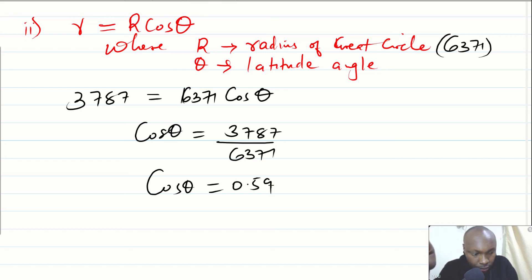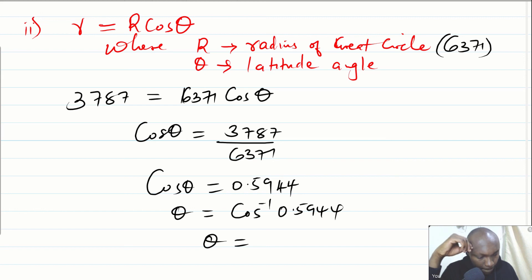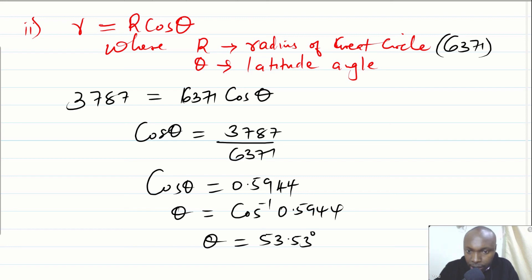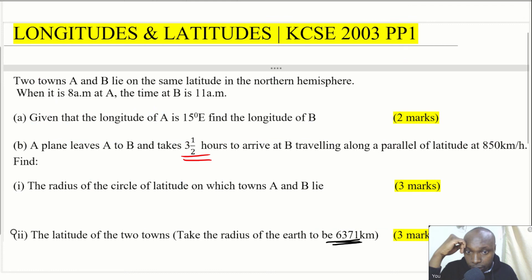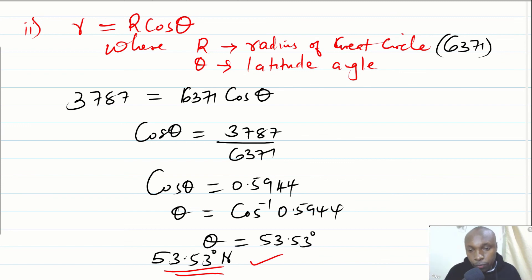So cos(θ) ≈ 0.5944, and θ = cos⁻¹(0.5944) ≈ 53.53 degrees. Since both towns lie in the northern hemisphere, the latitude on which both A and B lie is 53.53 degrees north. That is how you solve this question.